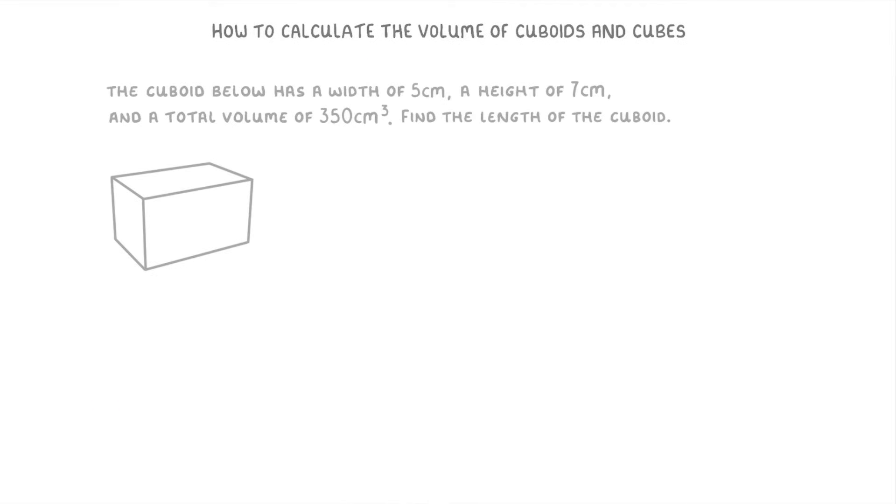Let's have a go at an exam-style question now. So in this question we're told that a cuboid has a width of 5cm, a height of 7cm, and a total volume of 350cm³. And our job is to find the cuboid's length.